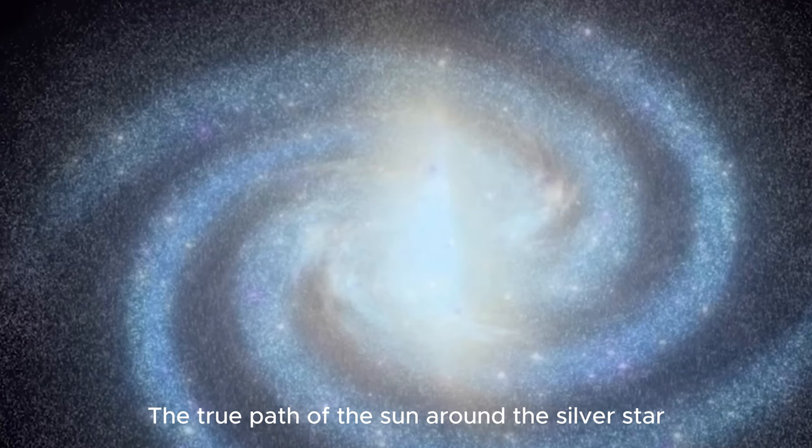So it's hard to calculate directly the true path of the Sun around the galactic center. We need to put the Sun into a larger system. Secondly, in this system, the stars must be moving at a speed similar to that of the Sun. In this way, the Sun relative to this system can be roughly regarded as static.